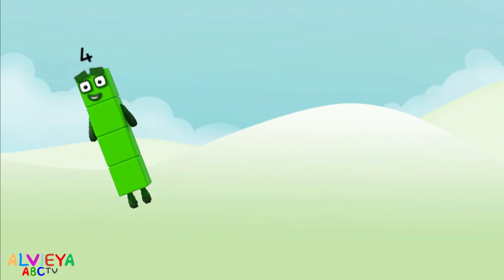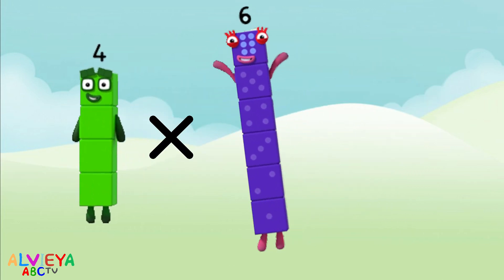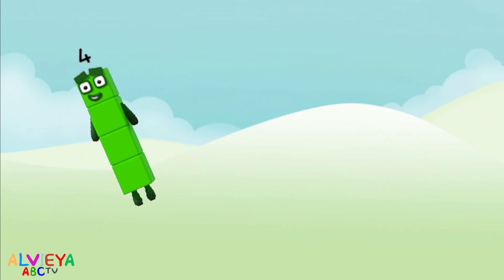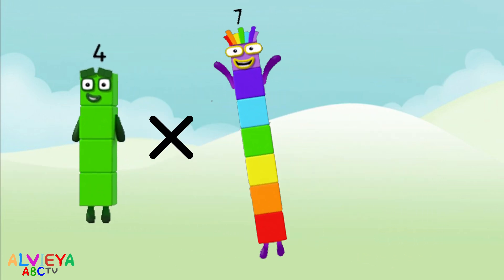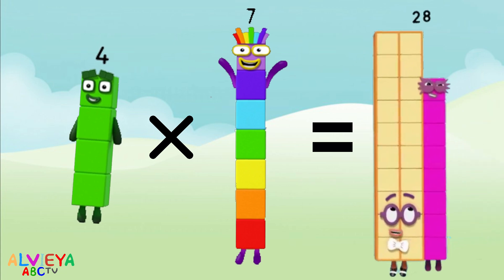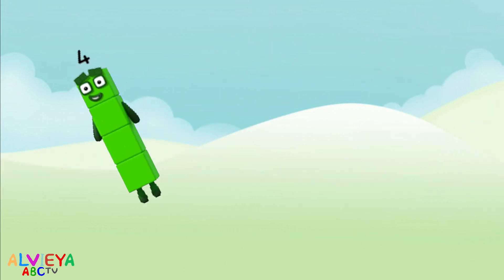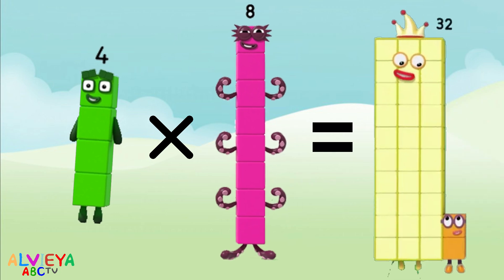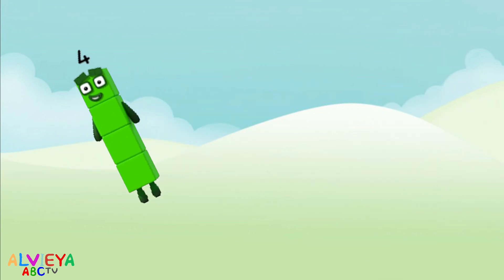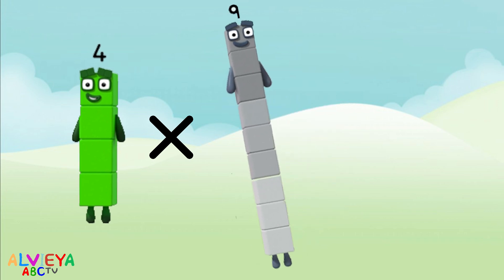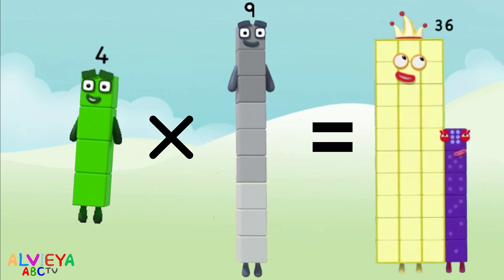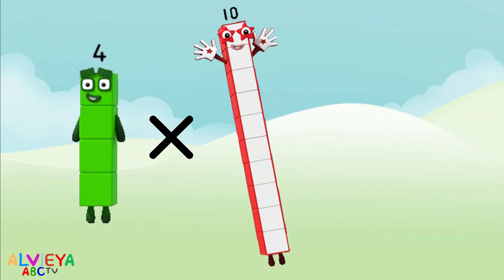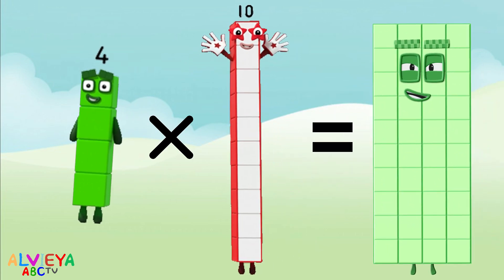Four times six equals twenty-four. Four times seven equals twenty-eight. Four times eight equals thirty-two. Four times nine equals thirty-six. Four times ten equals forty.